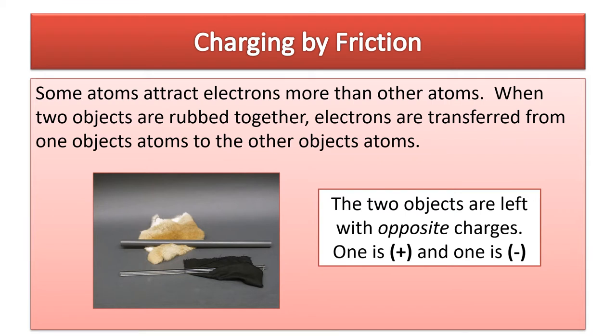Charging by friction. Some atoms attract electrons more than other atoms. When two objects are rubbed together, electrons are transferred from one object's atoms to the other object's atoms. The end result of charging by friction is always that the two objects are left with opposite charges — one positive and one negative.